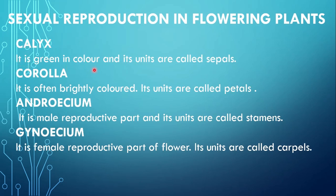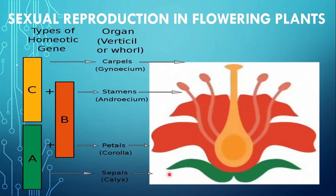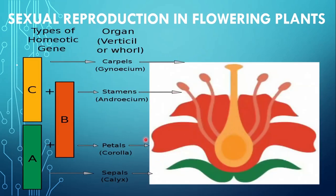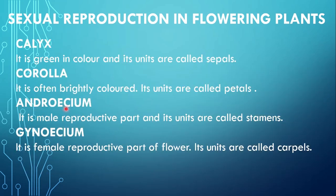Calyx is green in color and its units are called sepals. Is diagram mein yeh green colored sepals hain, they are making the calyx. Second one is corolla, it is often brightly colored and its units are called petals. These darker colored petals are making the corolla. Corolla mein yeh petals mostly brightly colored hoti hain because in petals ke bright color ka maqsad insects ko pollination ke liye attract karna hota hai.